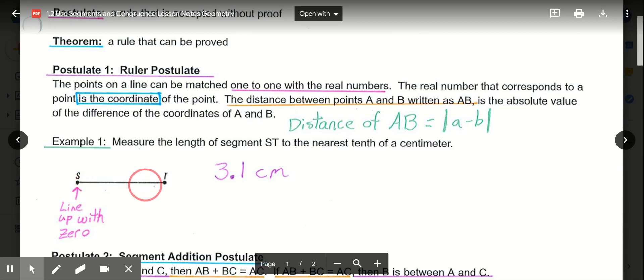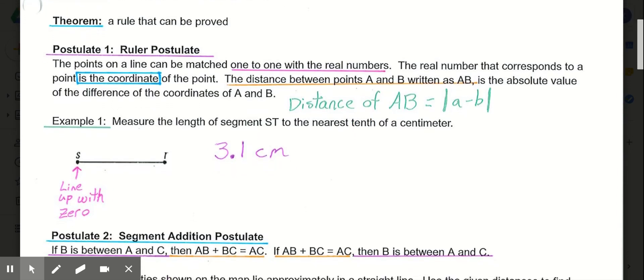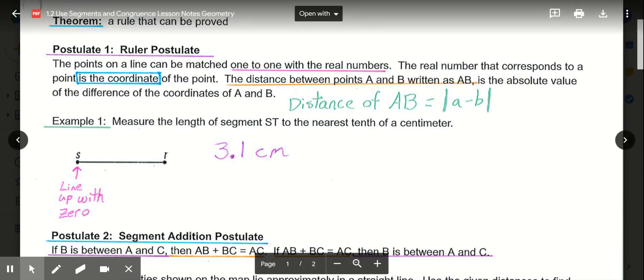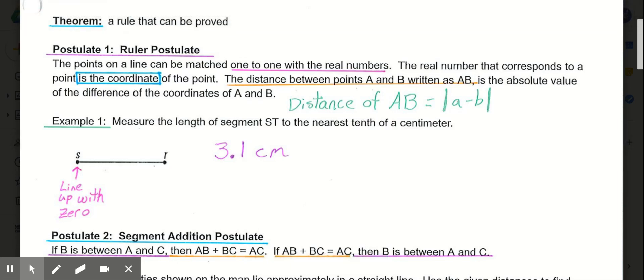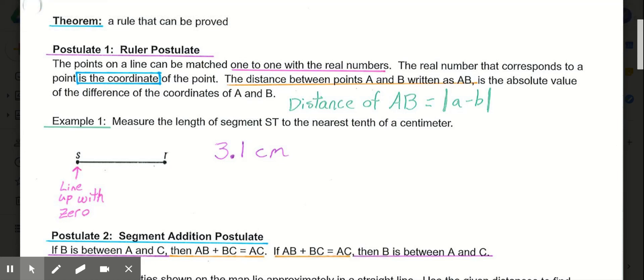So then from S to T, that line segment measures 3.1 centimeters. So the tenth is one decimal point, so our nearest tenth would be 3.1. So that's just a simple example of the ruler postulate. By setting zero at S, and T was at 3.1, that allowed us to measure the segment ST. So that is an example of what the ruler postulate means. It allows us basically to measure segments, or to measure the distance between two points.